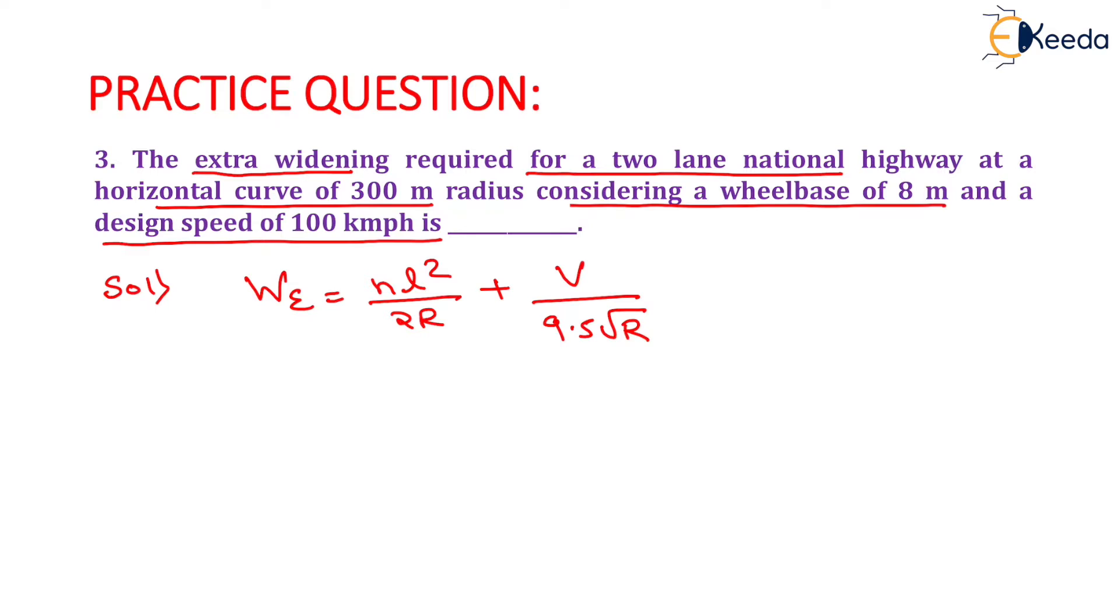Now, the value of small n is given as 2 for two lane road and the value of length of vehicle is given as 8. So, it will be equals to 8 square and the radius of horizontal curve is given as 300 meter.